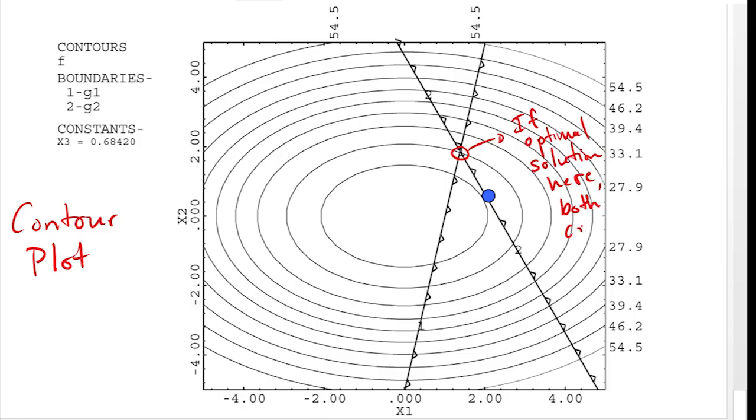So if the optimal solution were here on the contour plot, then both constraints would be active. The blue dot is actually the optimal solution. There I have my g1 and g2 constraints, and you can see that g1 is not active at the optimal solution. So what I'm going to do is just set lambda 1 equal to zero and resolve.